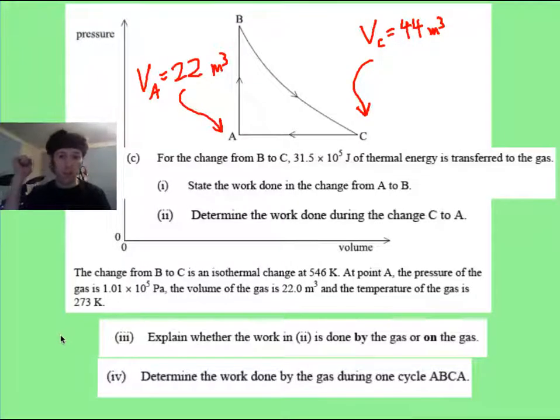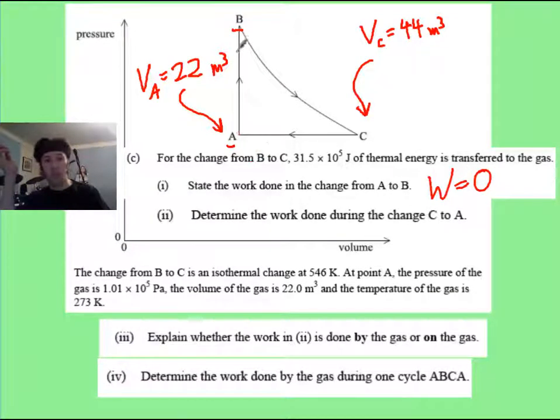Here are some other parts of this same question. Pause it, see what you can do. Now part one is a sucker question. Don't be a sucker. Because they're asking for the work done from A up to B. And that's crazy, it's zero. Because there's no change in volume, and you can't have any work done if nothing moves around, if there is no expansion or contraction of gas.